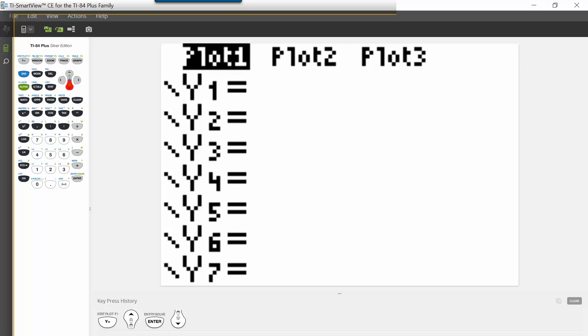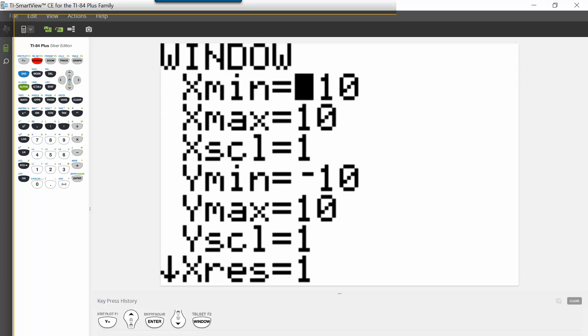The next thing we need to do is to set a window. So we're going to go to the window button and we want to think about the x values that we put in. We want to choose something smaller than our smallest x value and larger than our largest x value. So remember, our x values represented years. We started with zero, we ended with 47, so a good window might be negative 10 to 50.